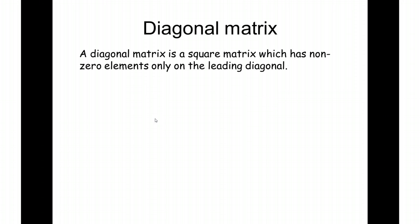In this lesson we're going to be looking at diagonalisation. Now, a diagonal matrix is a square matrix which has non-zero elements only on the leading diagonal.